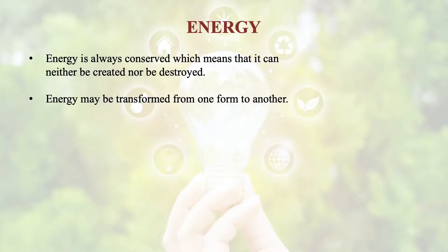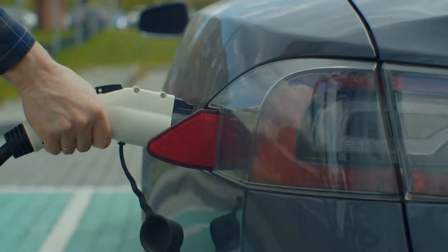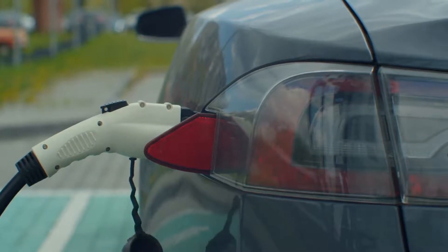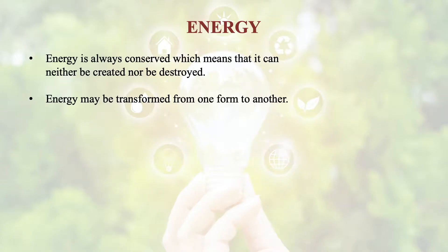For example, if you are seeing this electricity, where is it coming from? It is coming from some grid. From where is the grid taking this electricity? From some power plant. And how is the power plant producing energy? From steam. How is steam formed? By burning coal in the boiler or by giving the diesel supply. So the chemical energy of the fuel is converted into electrical energy. And this electrical energy could be used in any form — either you save it in a battery and run your car, or you utilize it in watching your television, or in lighting your bulb.